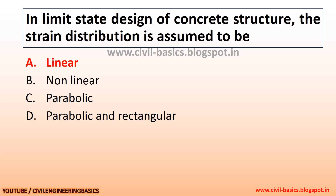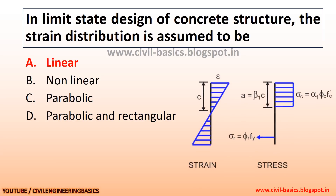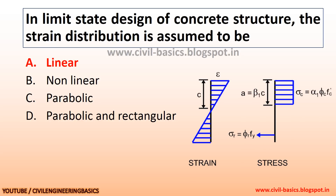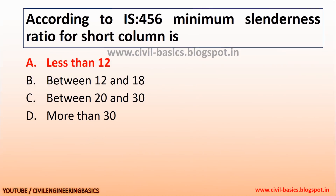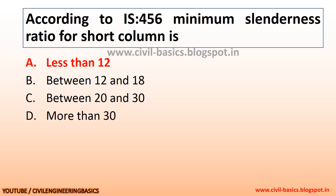In the limit state design of a concrete structure, the strain distribution is assumed to be linear. According to IS 456, the minimum slenderness ratio for a short column is less than 12.